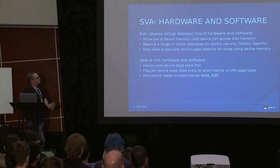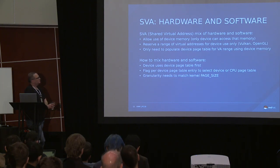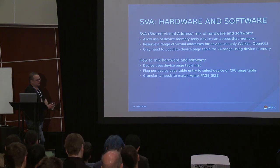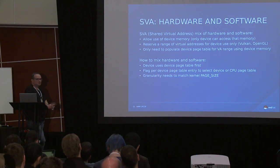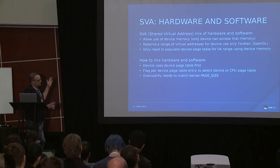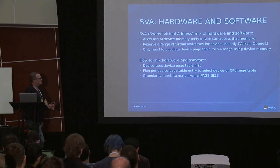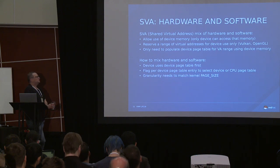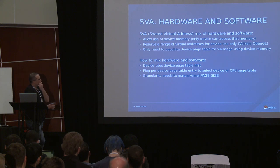One of the nice things when you mix and match is that you can use device memory — the best of both worlds. You can also reserve some range of your virtual address space for devices only. For instance, if you have a compute application that also has Vulkan or OpenGL running alongside it, you can reserve a chunk of address space for Vulkan or OpenGL, and only populate the device page table for virtual addresses you want to use on the device when you want to use device memory.